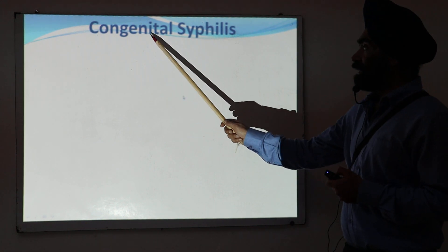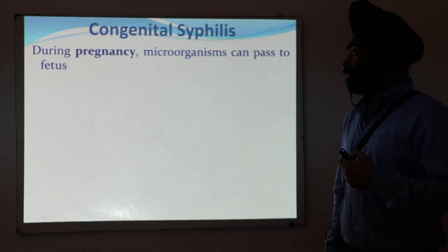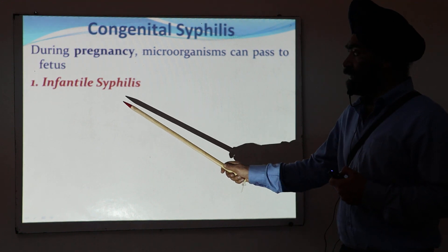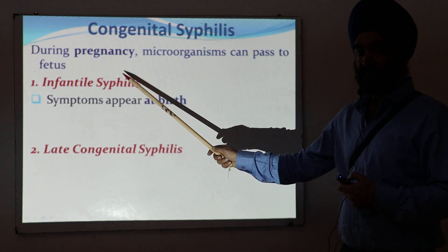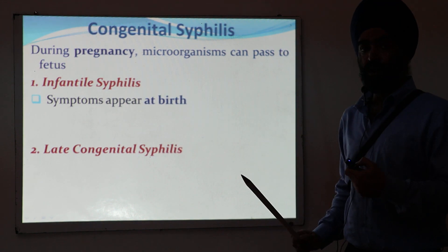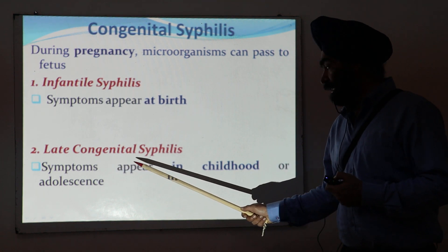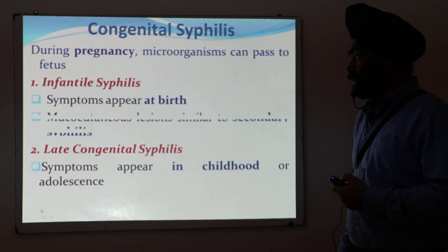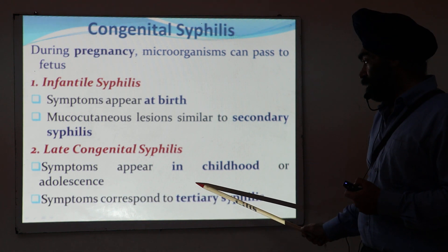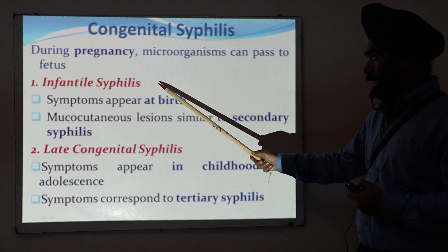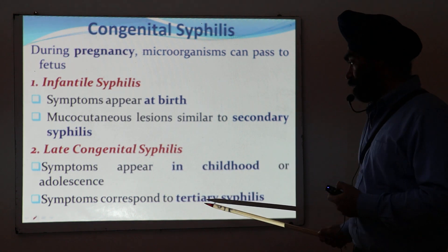Another form is congenital syphilis, when microorganisms pass from a pregnant woman to the fetus. Congenital syphilis is of two types: infantile, where symptoms appear immediately after birth in the newborn corresponding to secondary syphilis features; and late congenital, where symptoms appear during childhood or the adolescent stage, corresponding to tertiary syphilis manifestations.